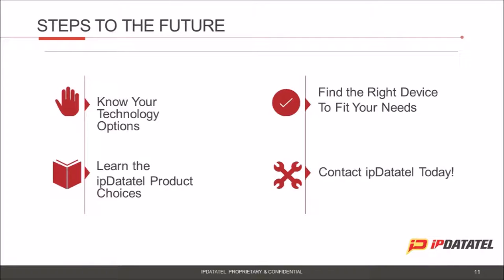Definitely a good case study to share. Looking at the Steps to the Future slide, there are four key things to summarize what we've covered. Number one: know your technology options. Ryan talked about KeySwitch, which is a simple and effective interactive solution, and KeyBus, which gives you total control and interactive access. Number two: learn the IP DataTel product choices. Today we covered CAT CDMA and CAT XT for KeySwitch, and BAT CDMA and BAT CDMA Wi-Fi for the full KeyBus experience.